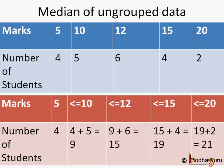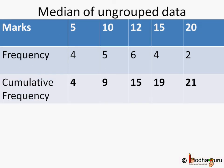What we have done here is change the frequency — that is, the number of students who got those many marks — to cumulative frequency, that is, the number of students who got less than or equal to those many marks. Let's see how cumulative frequency helps us find the median value.